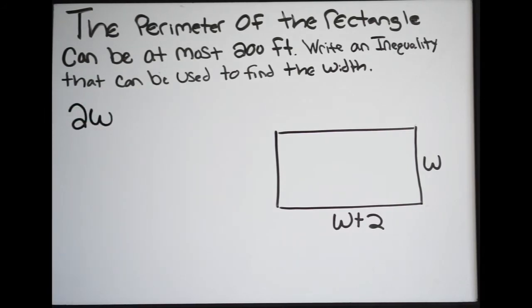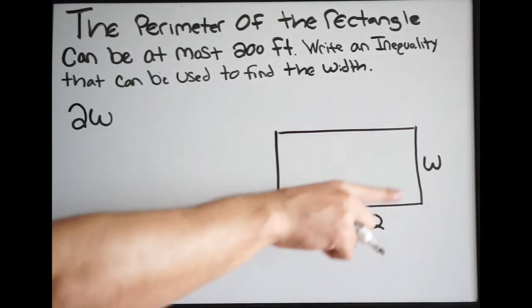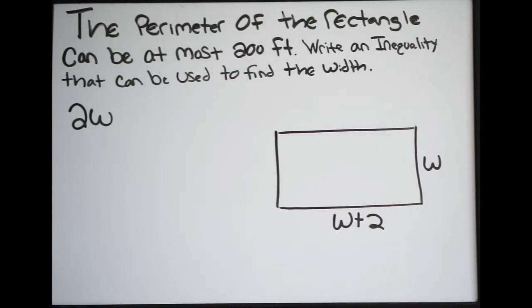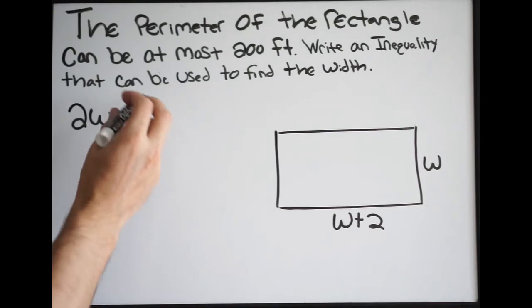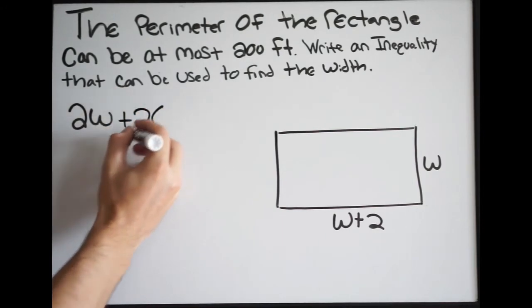It's also important to note, we didn't talk about this, but in order to find the perimeter of the shape we simply add up all the sides. So that's what I'm doing here. W plus w, which is two w, plus again we have two of these here and here, so we're going to have two times w plus two.